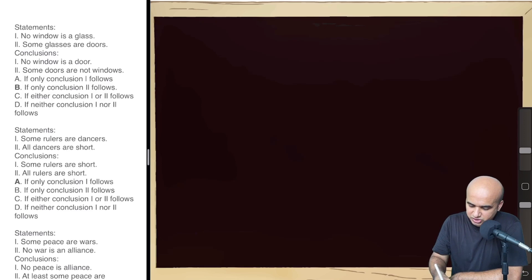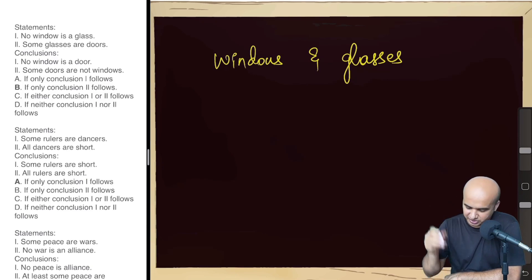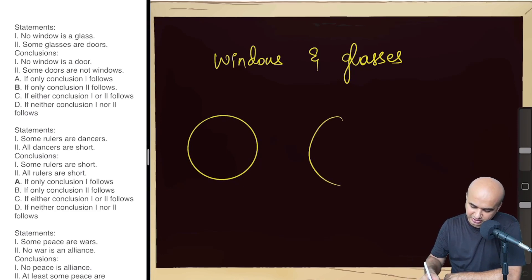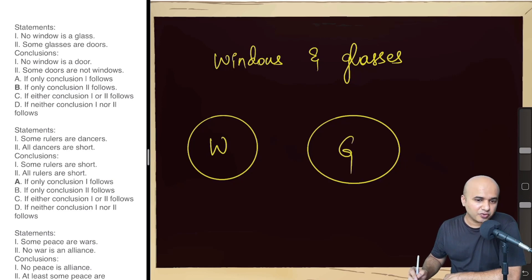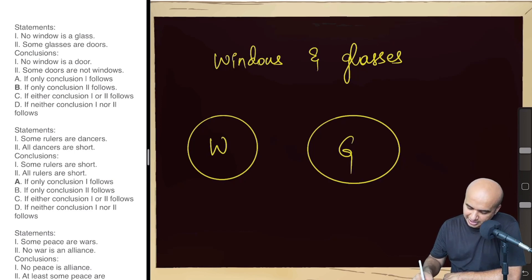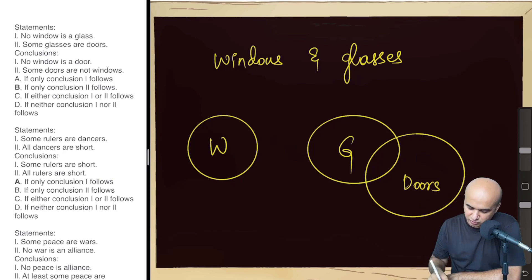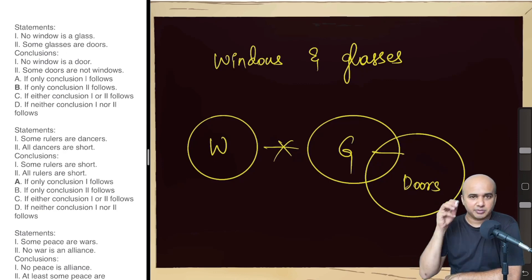They are talking about windows and glasses. No window is a glass — that means window and glass are two different things, so they are drawn as separate circles with no overlap. But some glasses are doors, meaning there is some common element between glass and doors — so there is an intersection between the glass and doors circles. We now have three things: window, glass, and doors. No connection between window and glass, but glass and doors share an intersection.